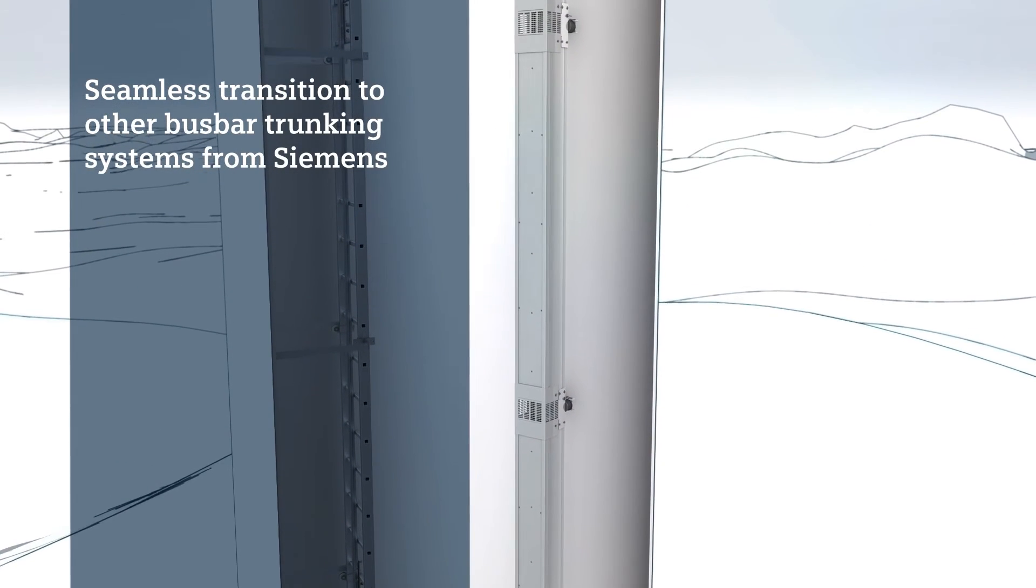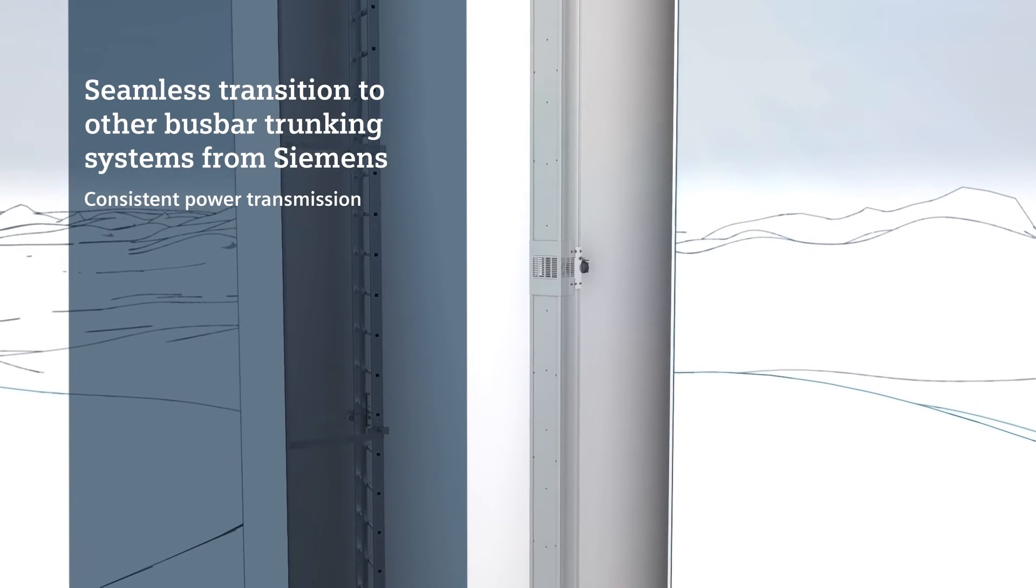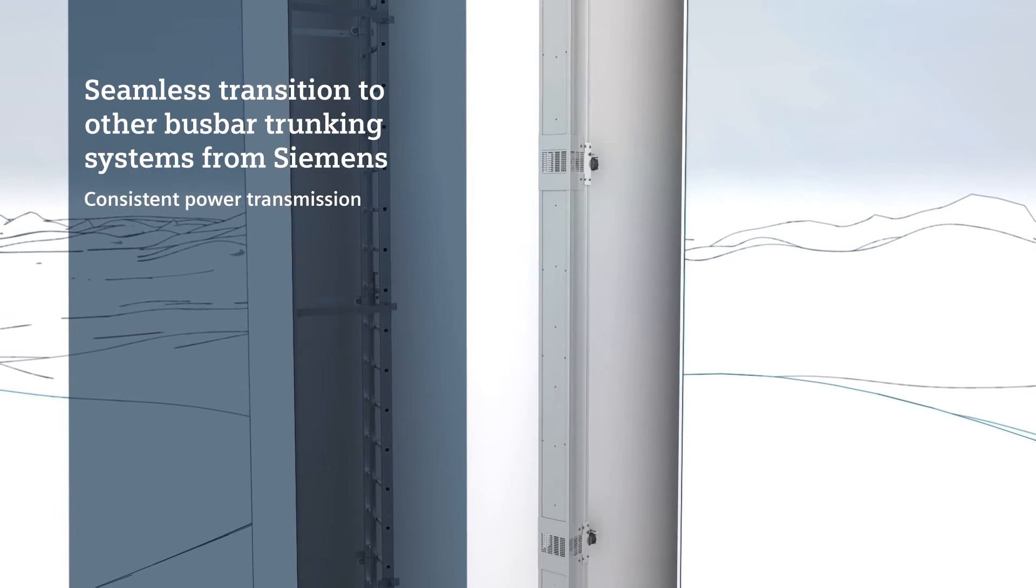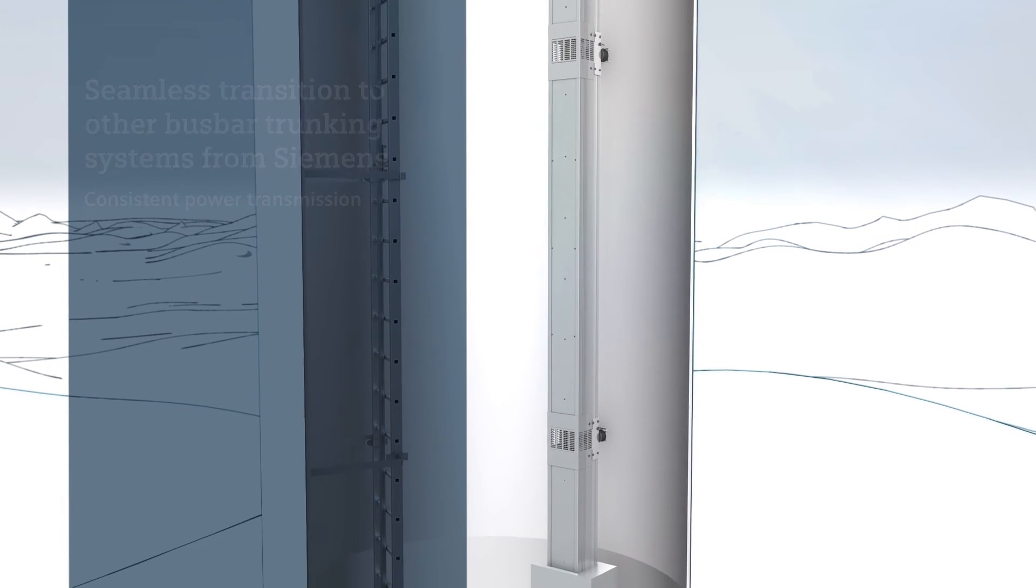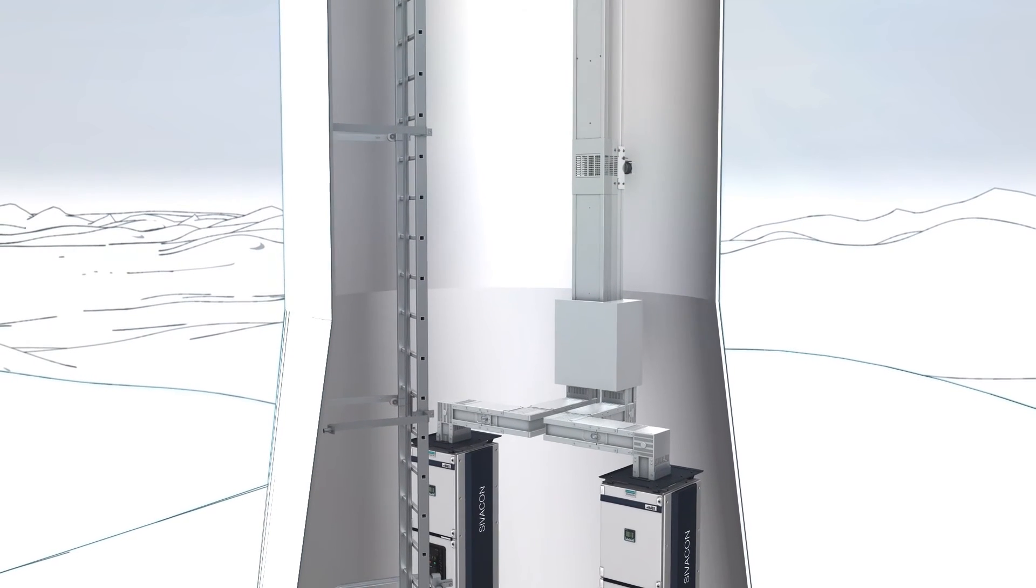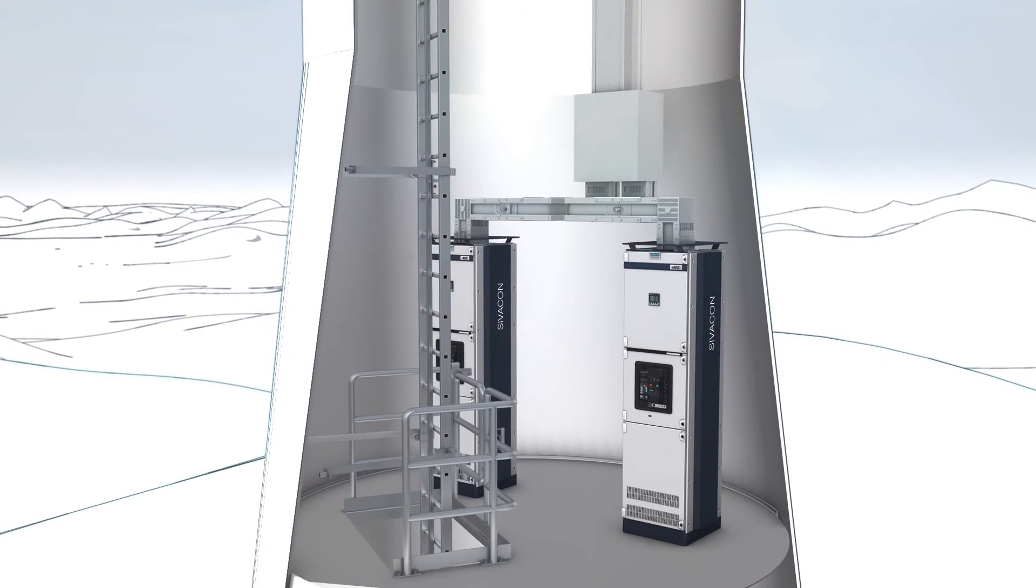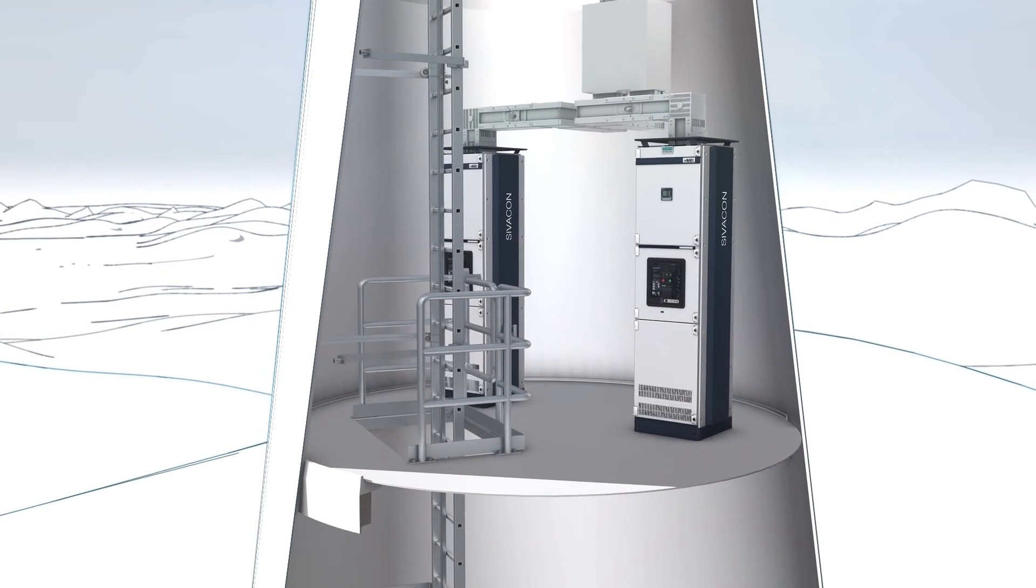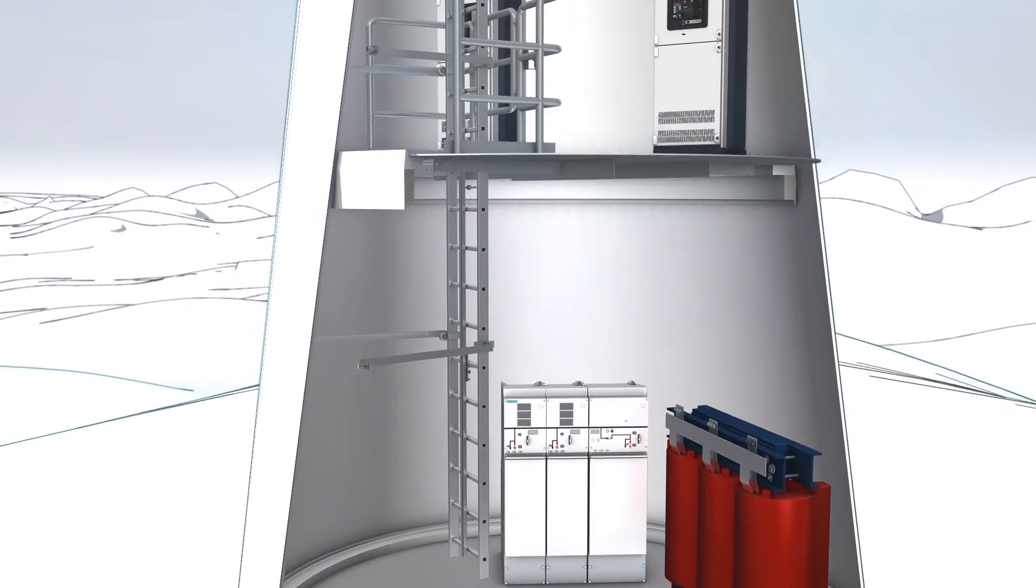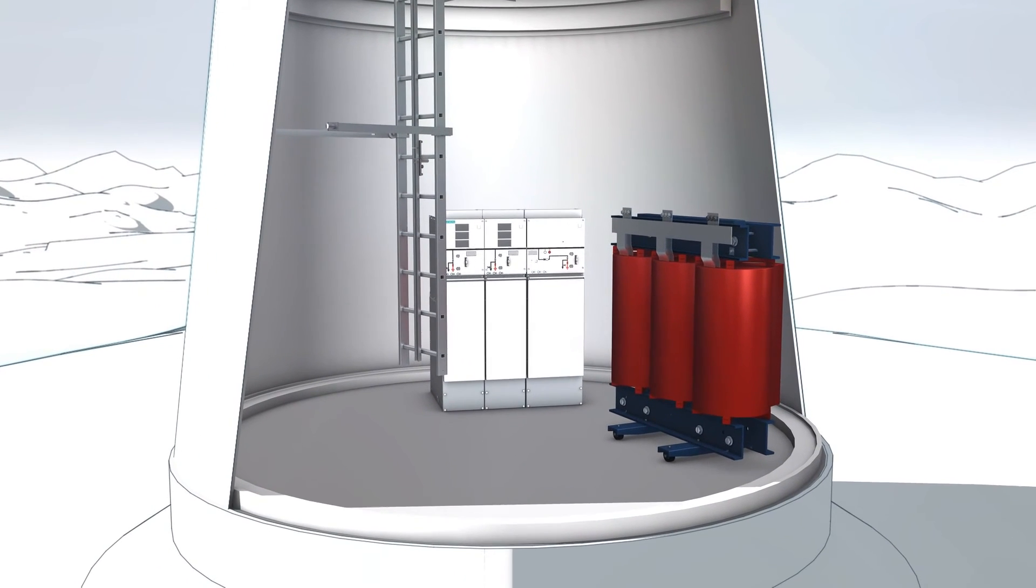The seamless transition to other Siemens bus bar trunking systems is possible without complications. This ensures consistent power transmission. Through a special bus bar unit, the LDM system is connected with the proven LD system. The LD system enables the design verified connection to the compact Civicon S8 low voltage switchboard. From there, the energy is safely fed into the grid through further systems.